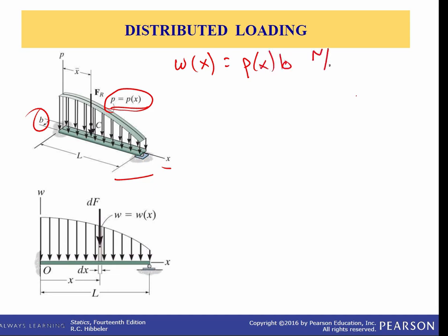To do this, we multiply the loading function by the width of the beam so that the weighting function — the weight as a function of distance — is equal to the pressure loading times the width of the beam, in newtons per meter or possibly pounds per foot. This is now a weight loading along the x-direction. Using the methods we have already investigated, we can replace this coplanar parallel force system with a single equivalent resultant force located at some distance x-bar from the end of the beam.